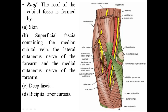In this picture you can see the bicipital aponeurosis. Here is the biceps brachii muscle and here is the tendon of the biceps brachii muscle. From the tendon, one projection comes out that is known as the aponeurosis.